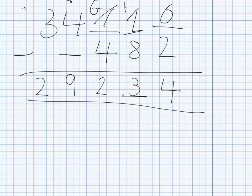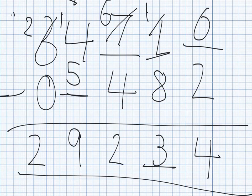We exchange from here to turn this into a 2, 14 take away 5 is 9, and then 2 take away nothing is 2.